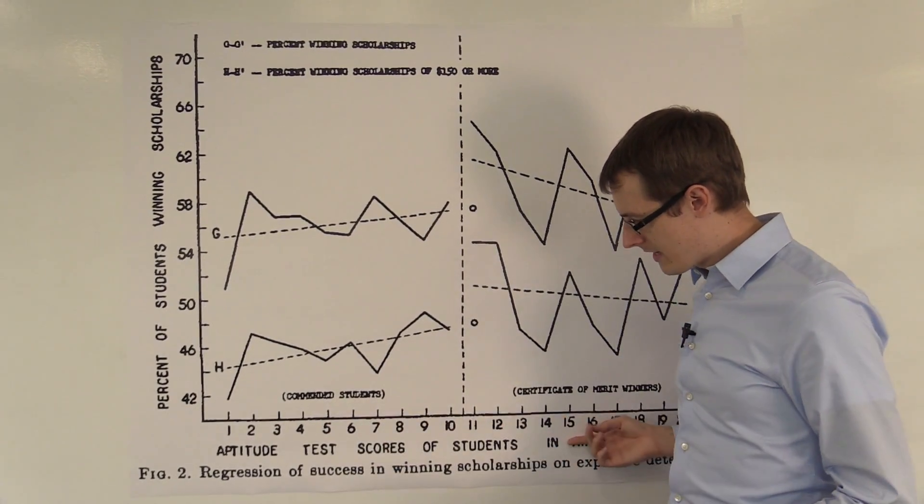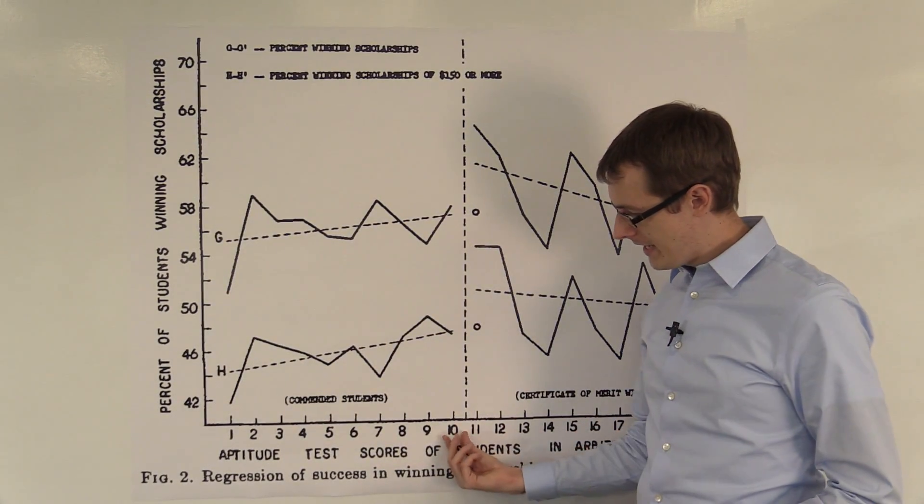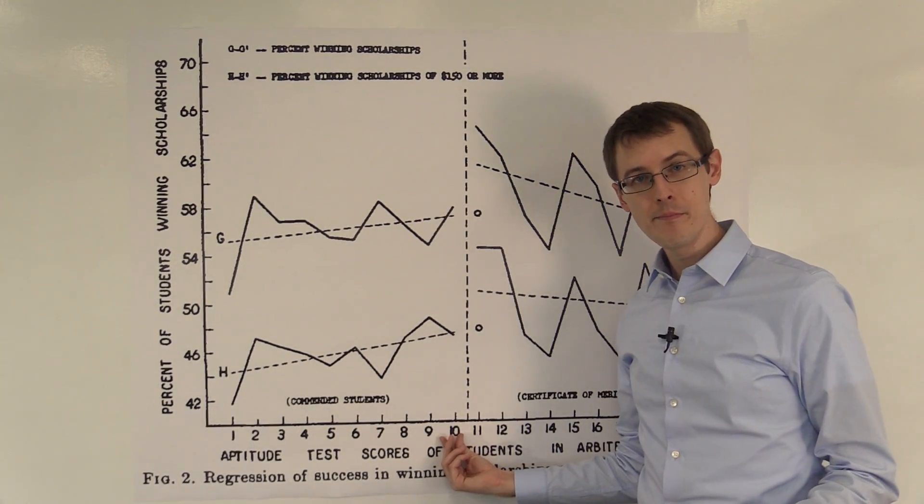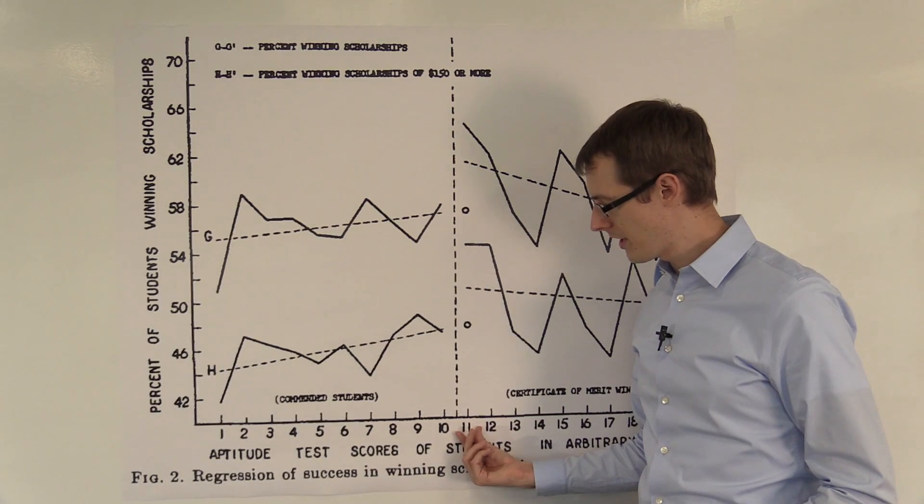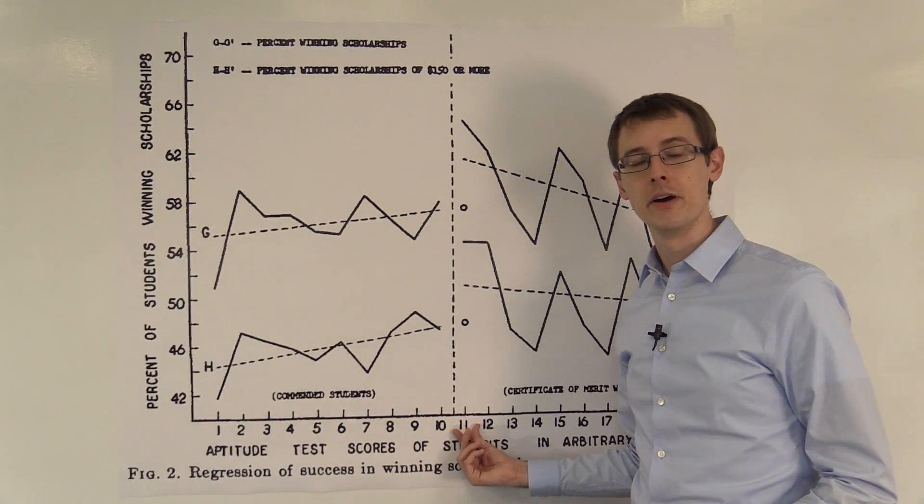We've got test scores on the horizontal axis. Here we've got students who scored a 10—they didn't get a certificate of merit, they're right below the cutoff—and students who scored an 11, they did get a certificate of merit, they're right above.